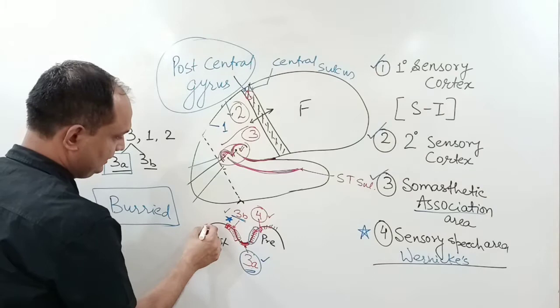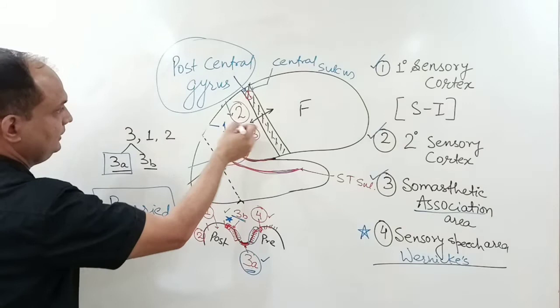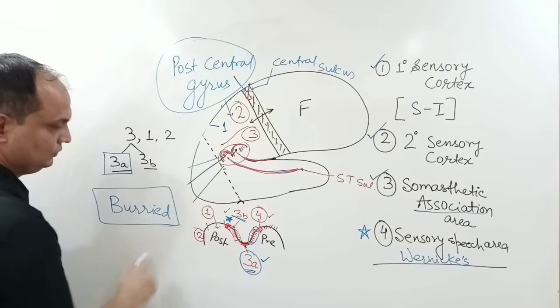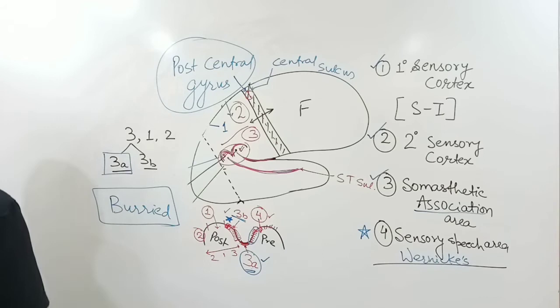Continuing with the post central gyrus, the central part of the gyrus is occupied by Brodmann's area 1, and the posteriormost part is area 2. So when reading the sequence in the post central gyrus, the Brodmann areas are labeled 3, 1, 2 in that order.